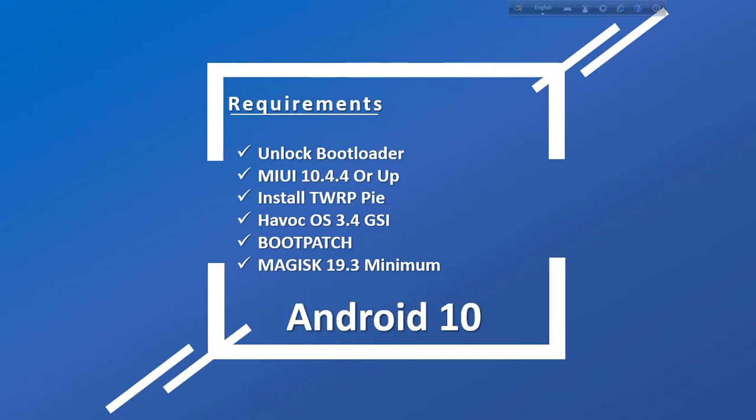The boot pass link is available in the video description — check the link in the description. If TWRP is not installed, the TWRP install video link is also in the description. For bootloader unlock, search YouTube for a guide.